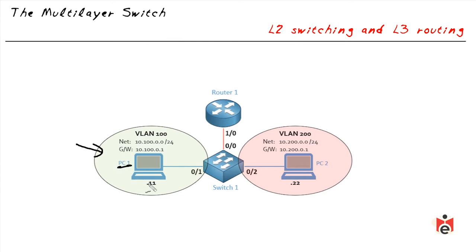However, if PC1 wants to reach out and connect to somebody outside of its network, it's going to need help from a router to route a packet to a different IP network. That's why computers know about a default gateway they can use to forward packets outside the local network. In VLAN 100, the default gateway is 10.100.0.1, and on VLAN 200, they use 10.200.0.1.